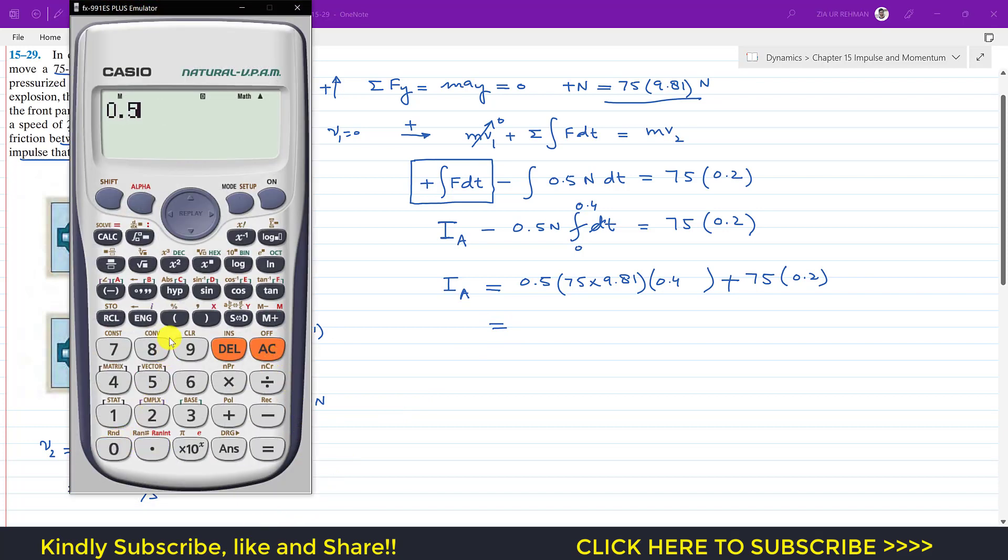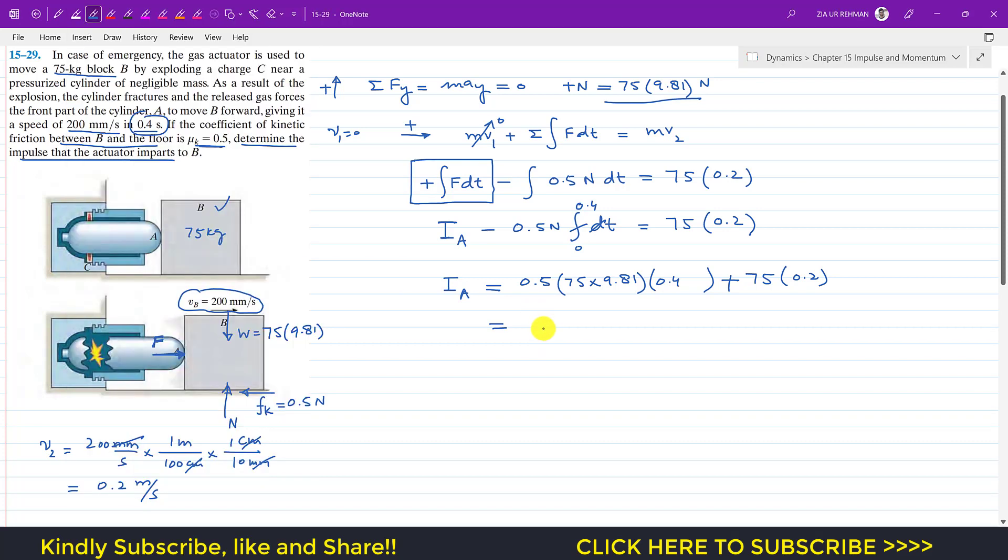Now we can find this: 0.5 into 75 multiplied by 9.81 multiplied by 0.4 plus 75 into 0.2. This gives me 162.15, so 162.15 newton-seconds is the impulse that the actuator imparts to block B for 0.4 seconds.